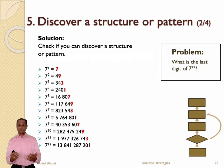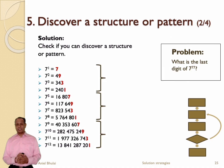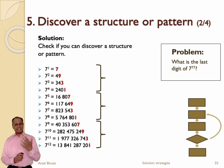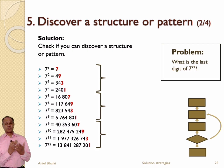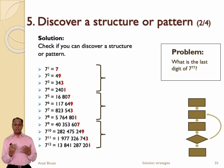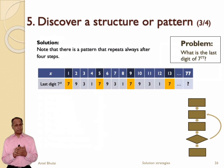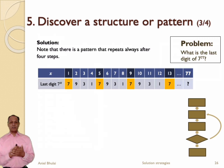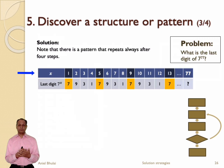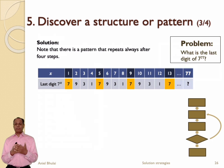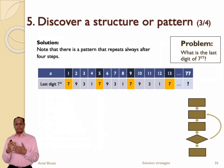Did you notice it? If you look carefully, we see that the last digits 7, 9, 3, and 1 are repeated after 4 steps. This is the pattern which we could use to solve the problem. Now let's write the last digits in a table for a better overview. In this table, x is the power of 7, shown in the first row. The last digit of the power is given in the second row. The pattern, which repeats after 4 steps, is given in orange color here.